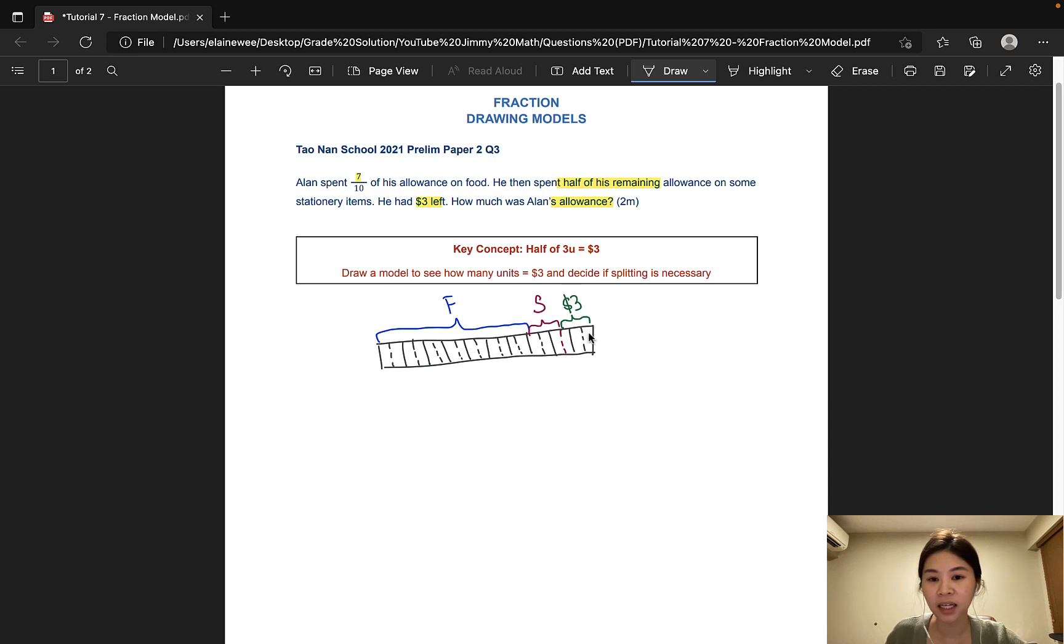Now we can clearly see that three units - one, two, and three - is three dollars. Therefore, one unit is one dollar. How much was Alan's allowance? It won't be 10 units because we have already split every unit into two parts. Therefore, the total units now should be 20 and not 10. So make sure that when your child or the student is solving these sorts of questions, we use the new total units and not the original. So naturally, 20 units would be 20 dollars. And this is the answer to this question.